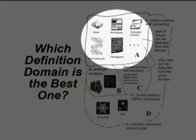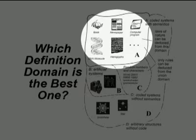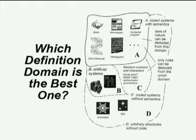In the domain of A we see syntax, semantics, pragmatics, apobatics, and also statistics. All the other cases — where we don't find all the five levels — we are outside of the definition domain of information.